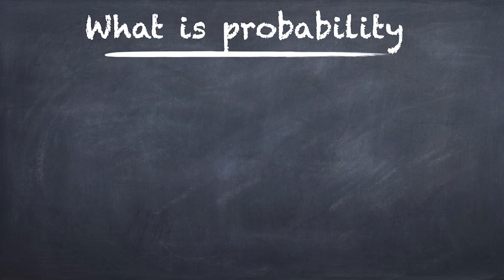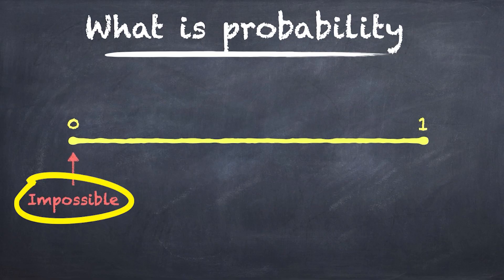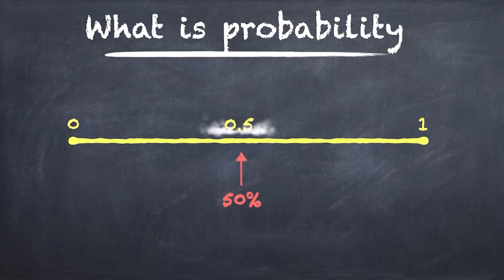Probability is the likelihood of something happening, and we usually think of it on a scale of zero to one. If something is impossible, then the probability is zero. And if it is absolutely certain, then we say the probability is one or 100%. And of course, the probability can be anything in between.